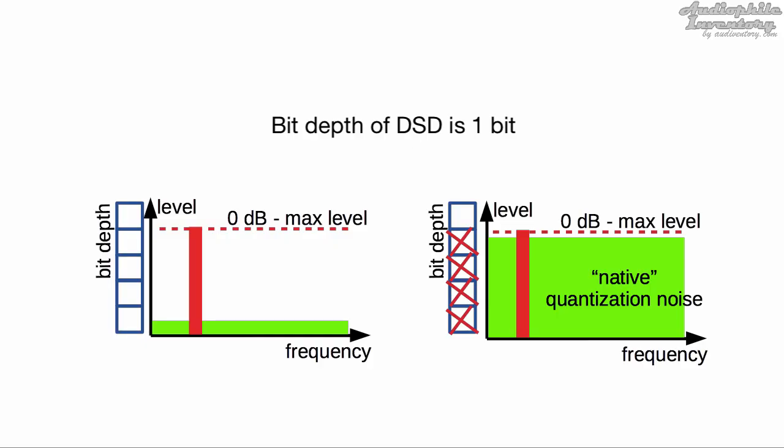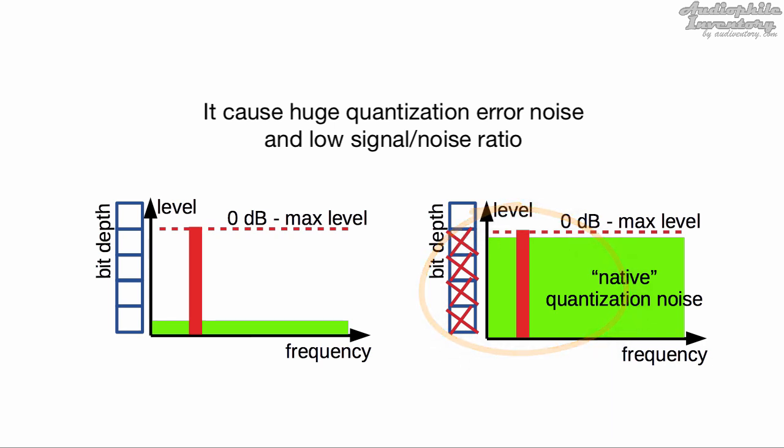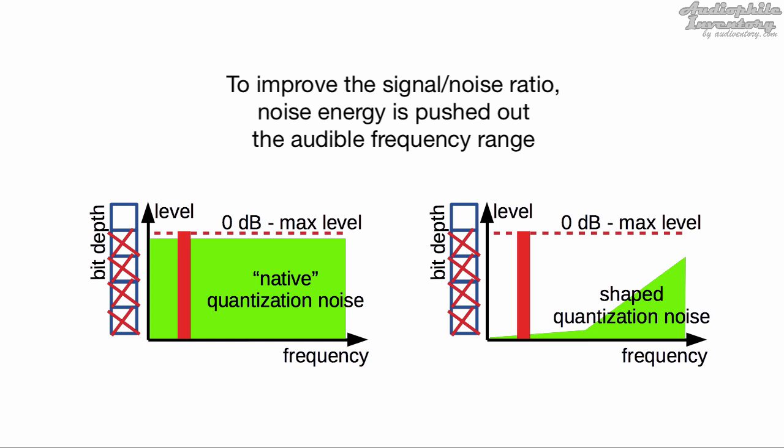The bit depth of DSD is one bit. This causes huge quantization error noise and a low signal-to-noise ratio. To improve the signal-to-noise ratio, noise energy is pushed out of the audible frequency range.